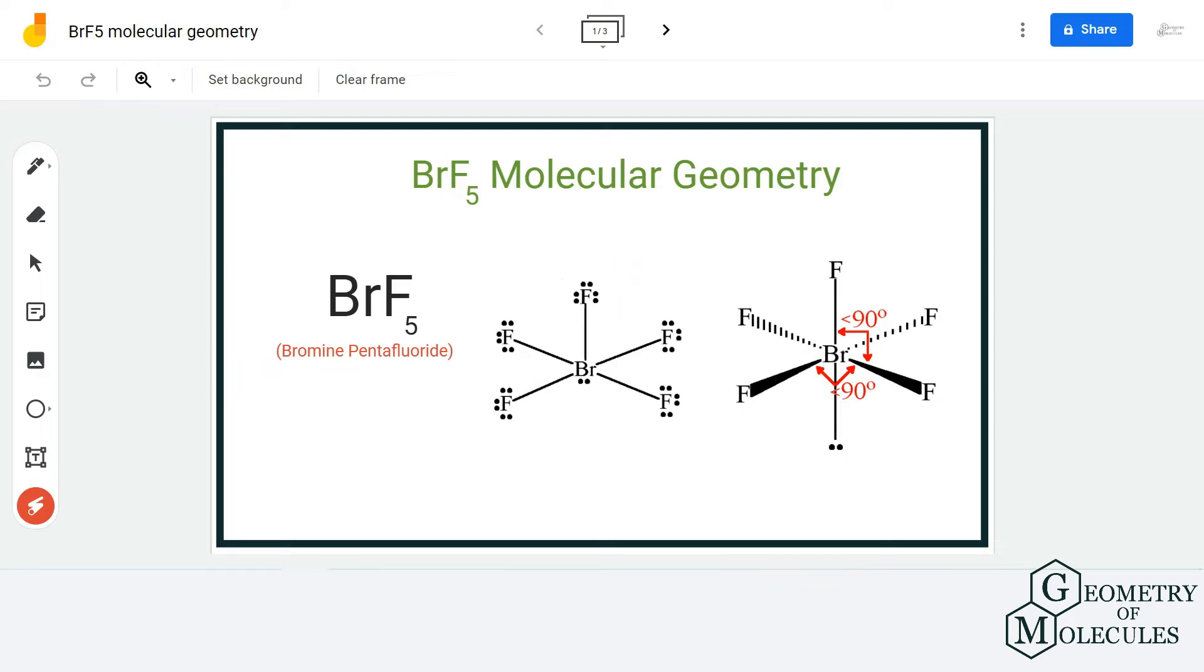Now if you look at its shape, it has a kind of square pyramidal shape because of these four fluorine atoms, and there is a 90 degree angle between these two fluorine atoms. The bond angles are 90 degrees for this, so it has a kind of square pyramidal shape.